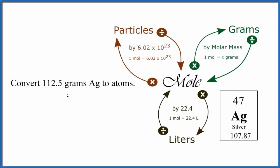In this video, we'll convert from grams of silver, that's Ag, to atoms. We're going to use this graphic here to help us. When you look at the graphic, you can see we have grams, and we want to get to atoms. That's particles. Particles are molecules, atoms, or ions.